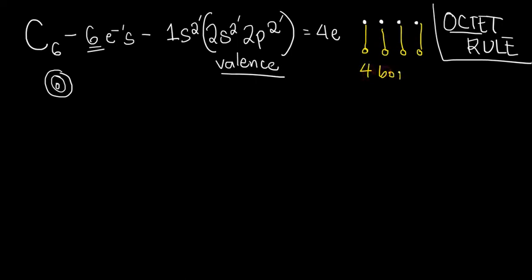Let me repeat that, 4 bonds. This is a really important magic number. In other words, we can call carbon tetravalent. That's just a fancy word for carbon having 4 bonds. Tetra means 4.